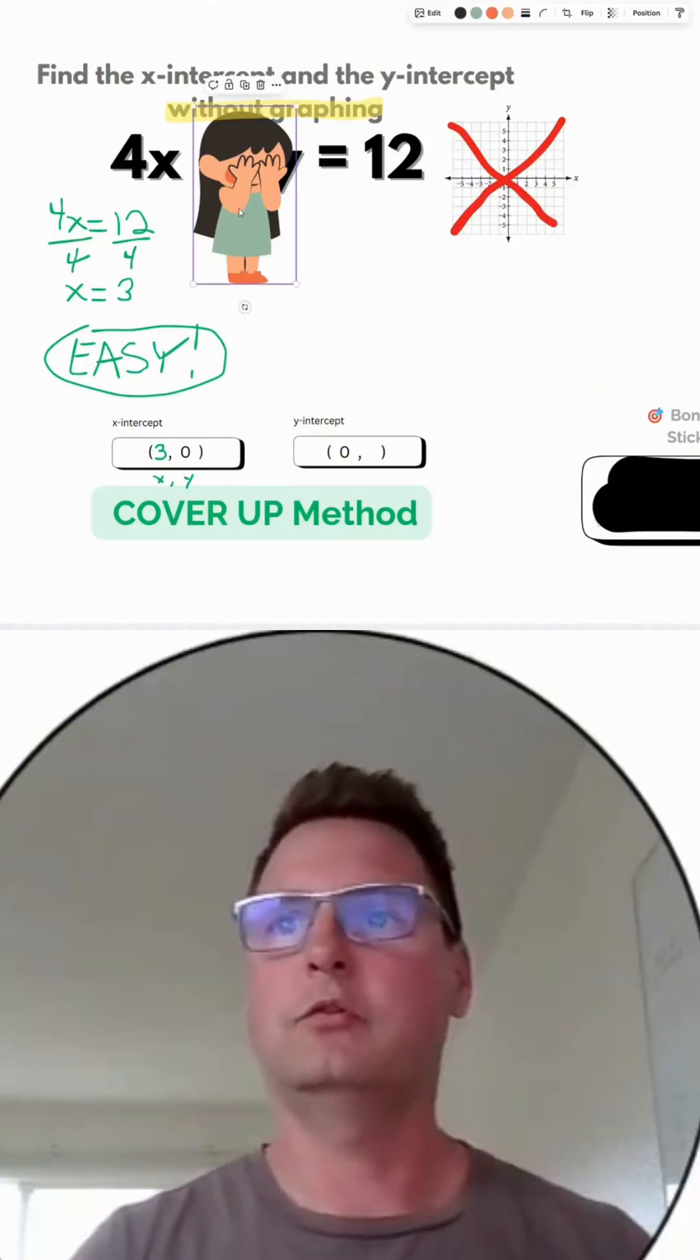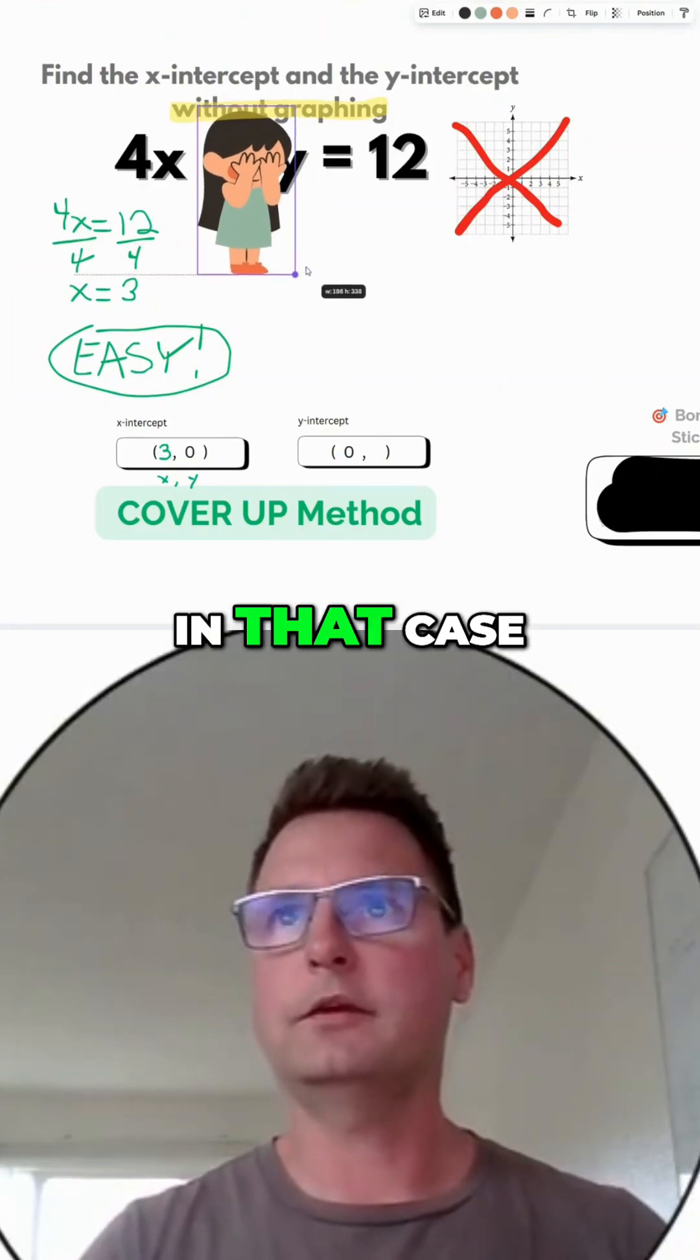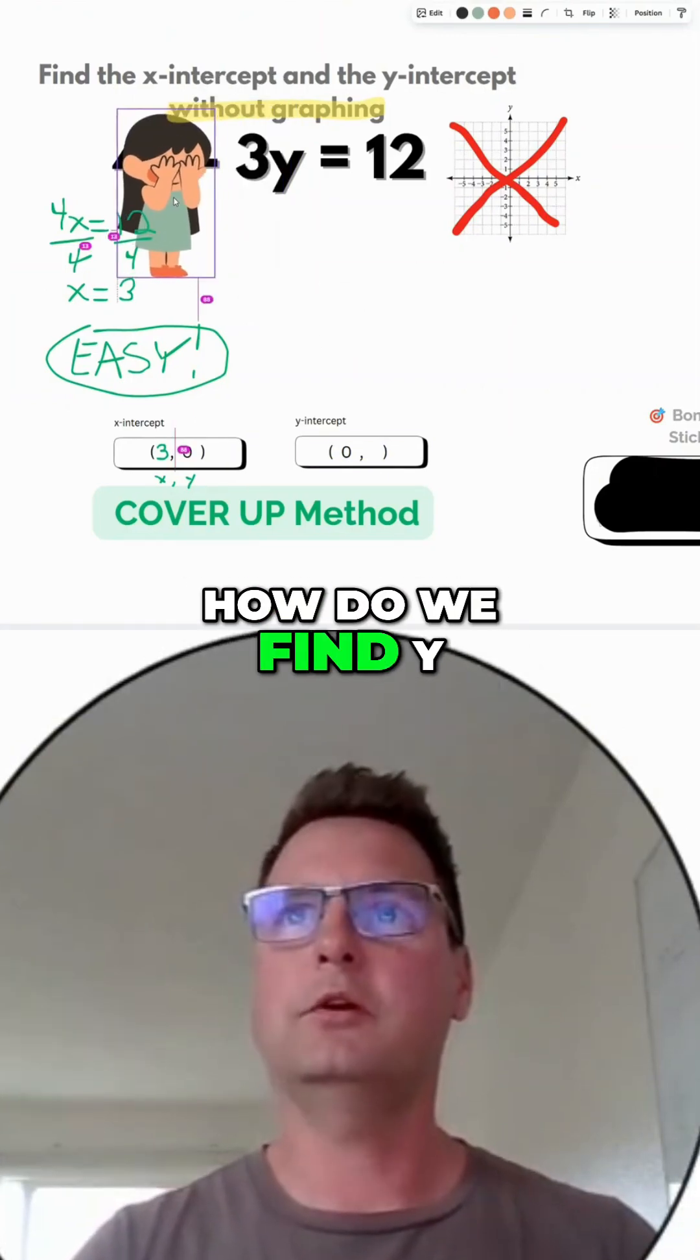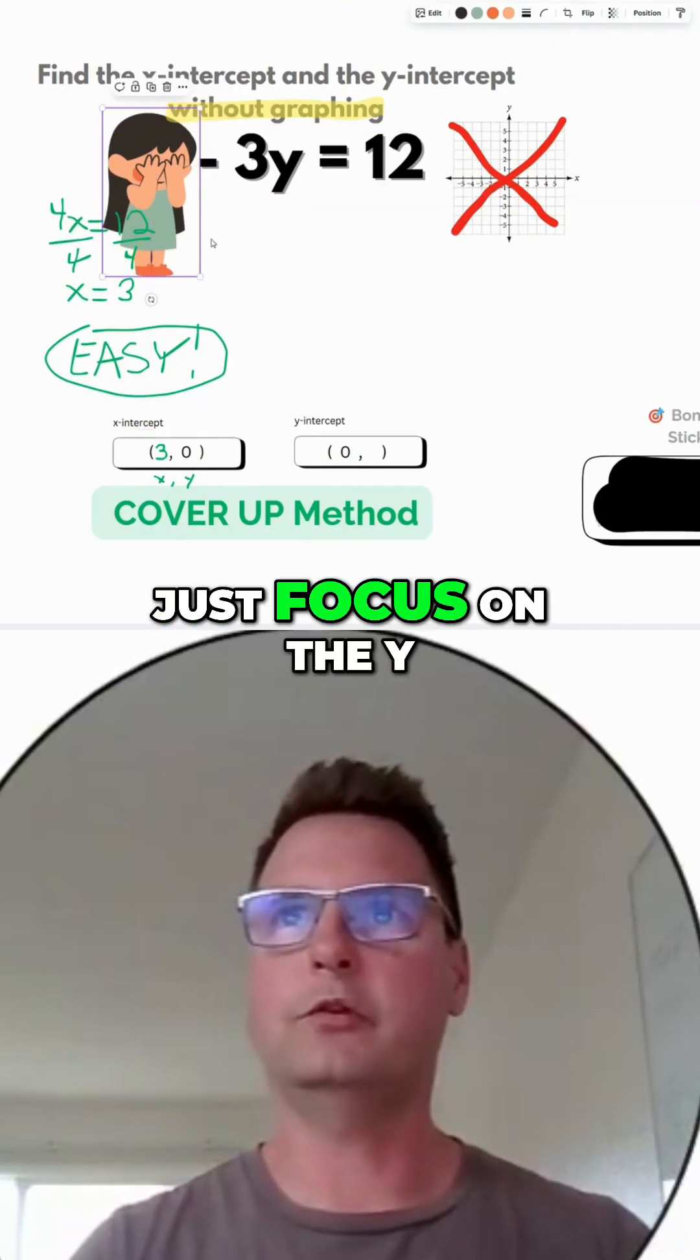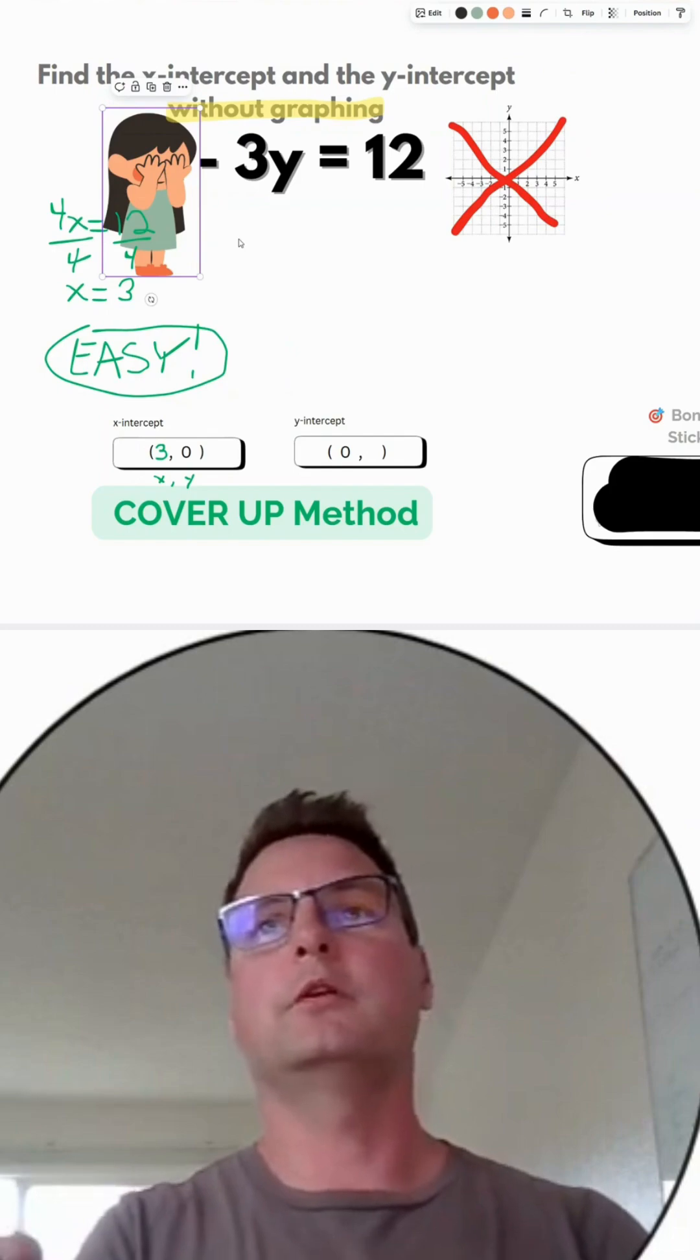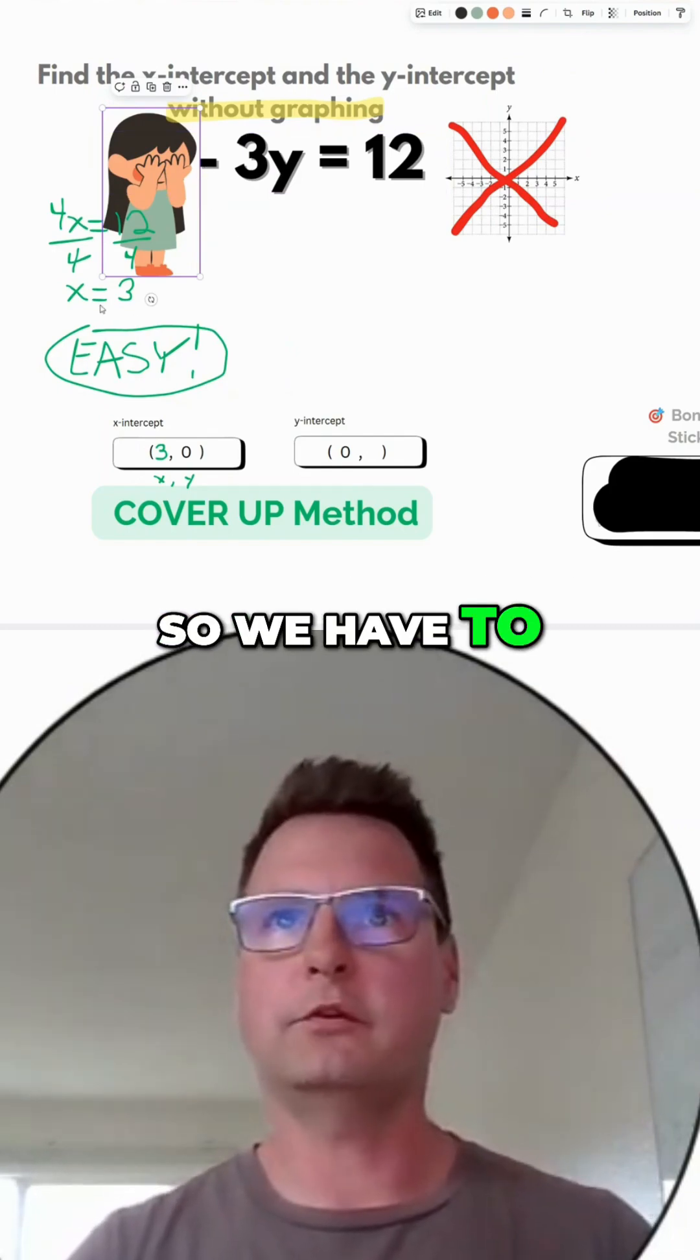What about the y-intercept? We know that x is zero in that case, so we just need to find y. How do we find y? We cover up the x part, just focus on the y, and remember the minus sign here is part of the y term, so we have to leave it in there.